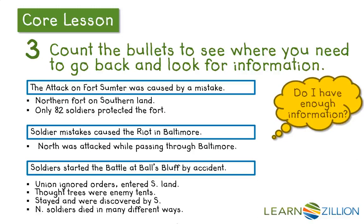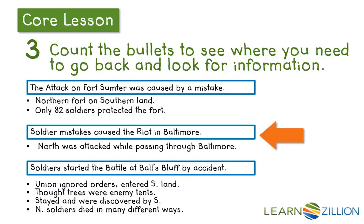Looking at my second box — 'Soldier mistakes caused the riot in Baltimore' — I only have one bullet point there, which tells me I really need to go back and look for more information. One bullet point is not enough to write a lot about, so I need to review the riot in Baltimore. Then looking at my third box, I've got four bullet points, so that's a lot of detail — I don't need to go back and research there. But in my second box, I definitely need to go back and research.